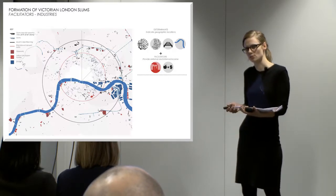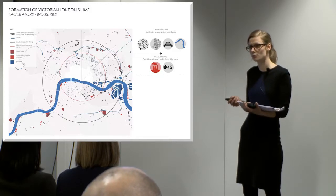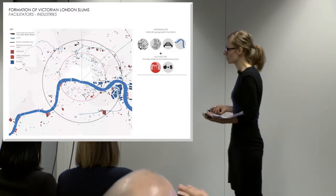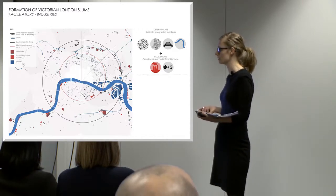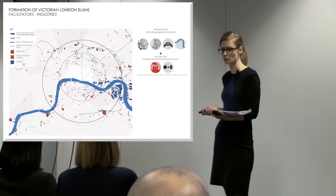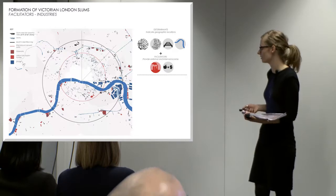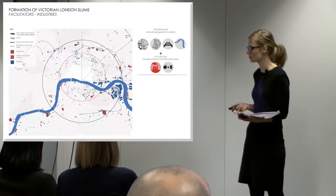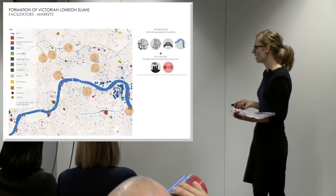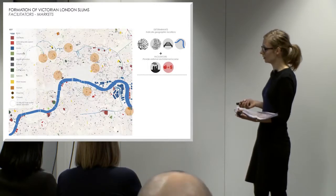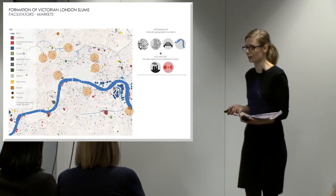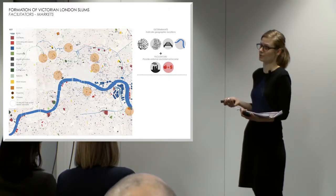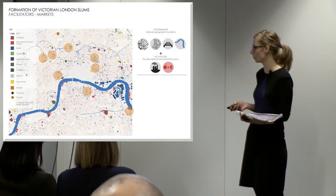Facilitators are basically low sources of income, which in Victorian London included gasworks, labor job opportunities, and docks — most of them located around the river and canals. After that, I looked into markets and found out that every single market in Victorian London had an informal settlement or a slum within a 15-minute walk.